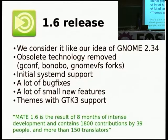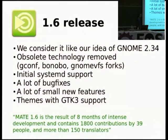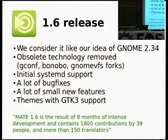The past year we got the 1.6 release, our equivalent of GNOME 2.34. It was a missing release. We removed all obsolete technology from MATE, like GConf and Bonobo, and replaced them with new libraries now found in GLib or GTK. We started to add systemd support to MATE, because it was missing in GNOME 2. We did a lot of bug fixes, solving some bugs that had been present in GNOME 2 for years.